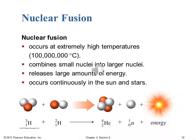Nuclear fusion generates far less harmful waste and is ultimately the desirable type of nuclear reaction we would want for the power plants of the future. Nuclear fusion occurs at extremely high temperatures — something on the order of a million degrees Celsius. It combines small nuclei into larger nuclei, so it's the opposite process from fission: here we're taking small nuclei and fusing them together into larger nuclei. Like fission, it releases very large amounts of energy, and this is what's occurring right now in our sun and other stars.